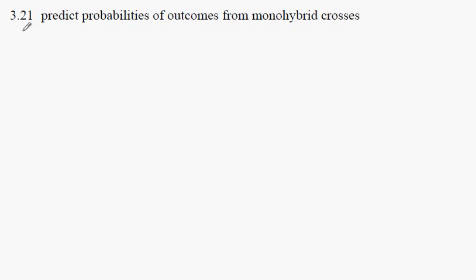IGCSE Biology, Syllabus Statement 3.21B, predicting probabilities of outcomes from monohybrid crosses.